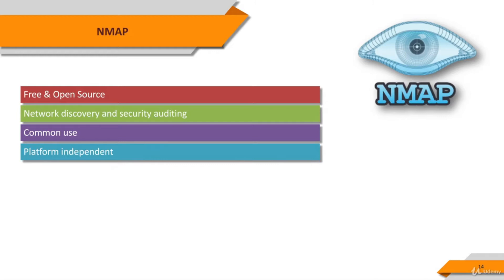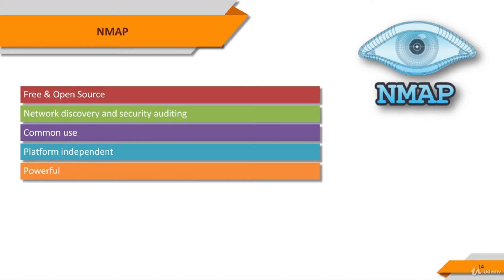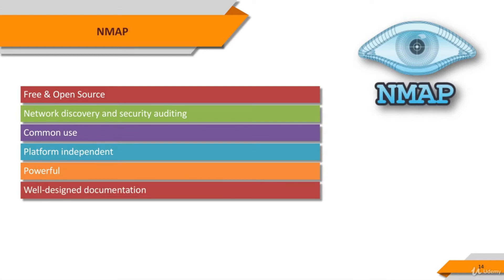NMAP runs on all major computer operating systems, and official binary packages are available for Linux, Windows, and Mac OS X. NMAP has been used to scan huge networks of literally hundreds of thousands of machines. NMAP is usually very good at documentation. Significant effort has been put into comprehensive and up-to-date man pages, white papers, tutorials, and even a whole book. You can visit NMAP.org to find out more about NMAP.